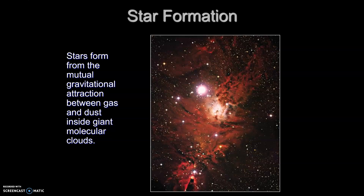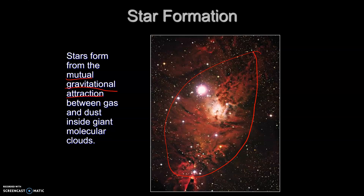The first thing we should start with is star formation. Stars form from mutual gravitational attraction between gases and dusts inside giant molecular clouds. As you can see in this image, we have this huge cloud here, and when we have that gravitational attraction of all these different gases and dusts in that cloud, we get the formation of a star.